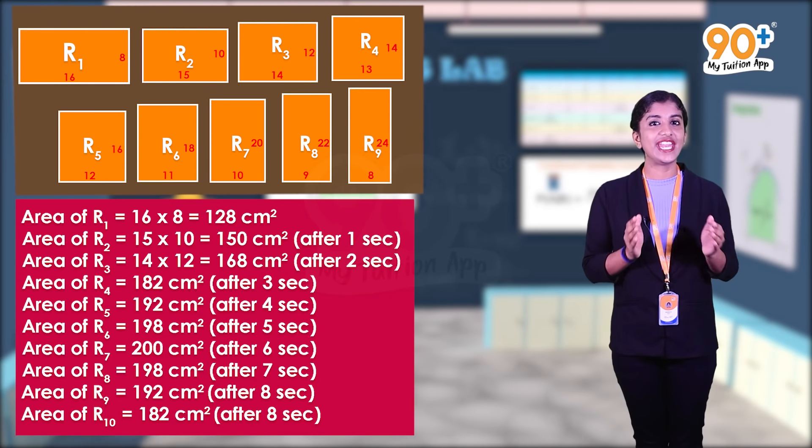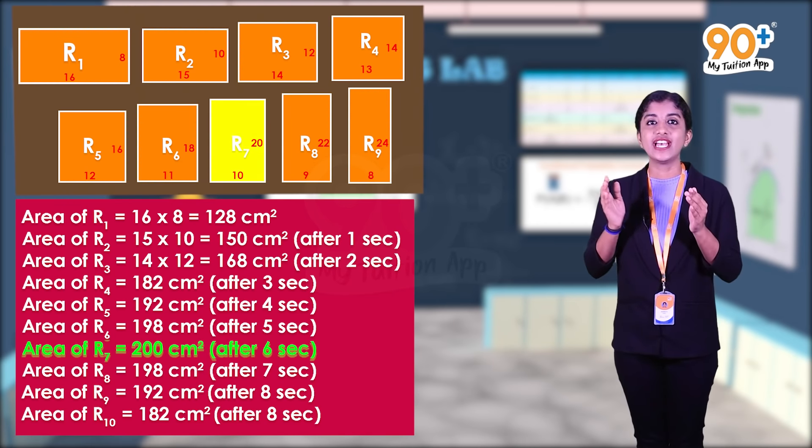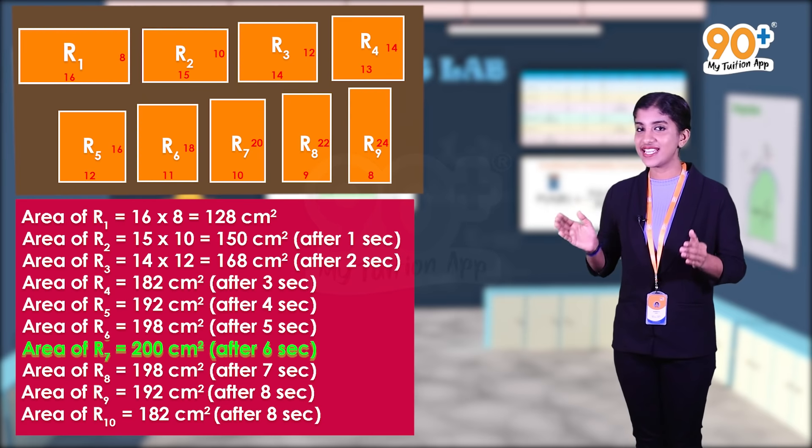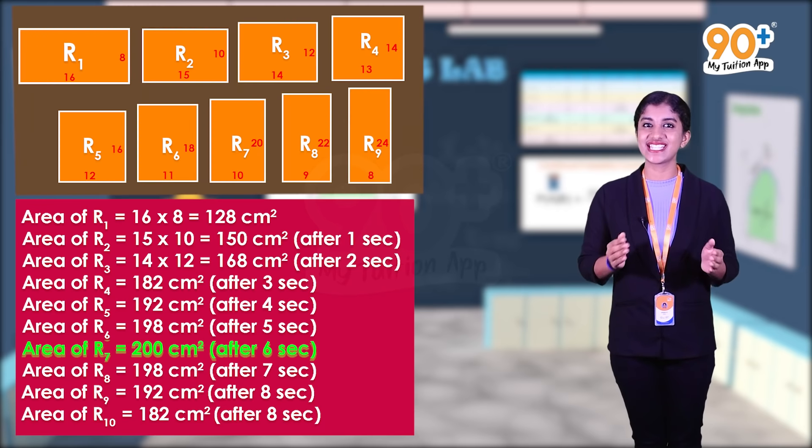Here the maximum area is from rectangle r7. That is, the area of the rectangle is maximum after 6 seconds.